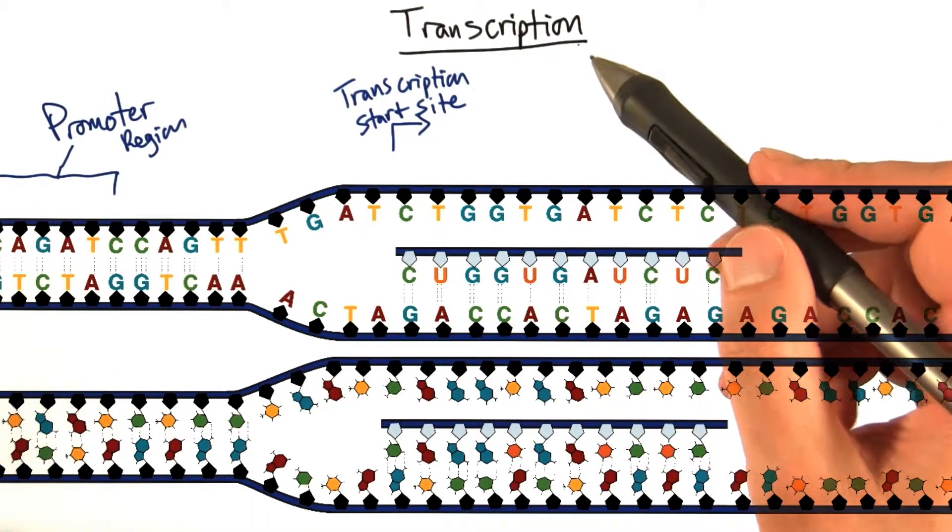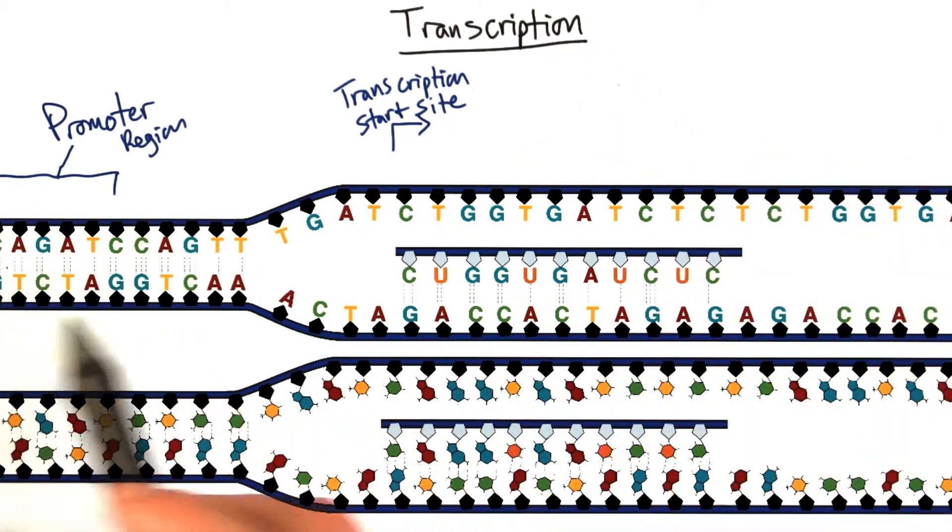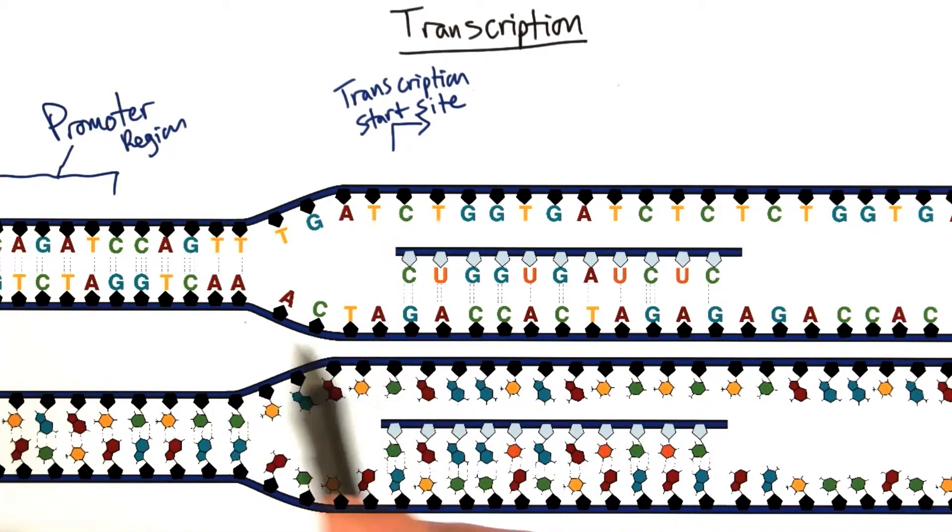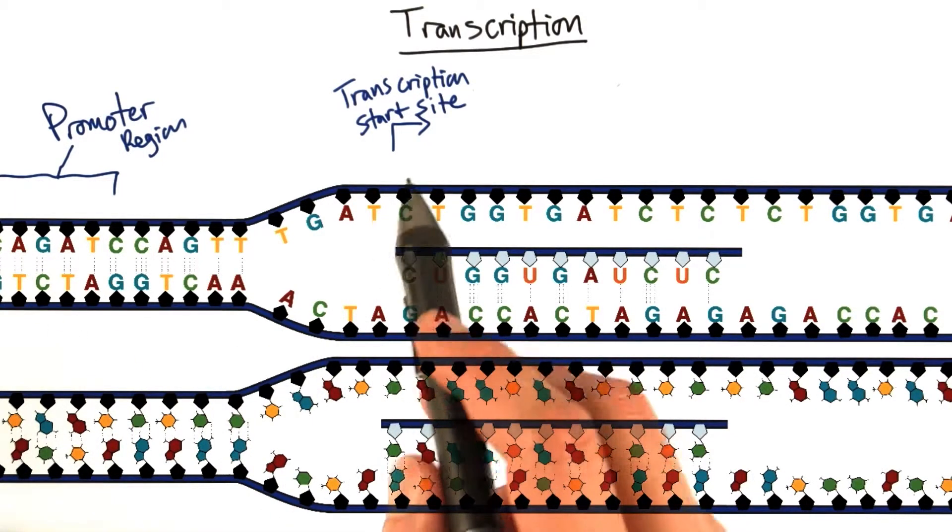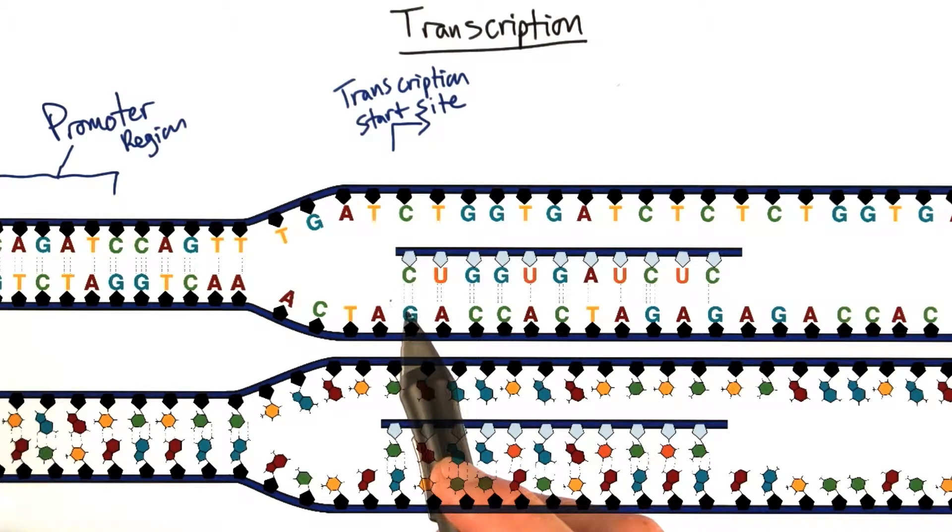So here we have it, transcription. A promoter region, a sequence of DNA, tells proteins exactly where transcription should start in a particular region. And we call this region the transcription start site.